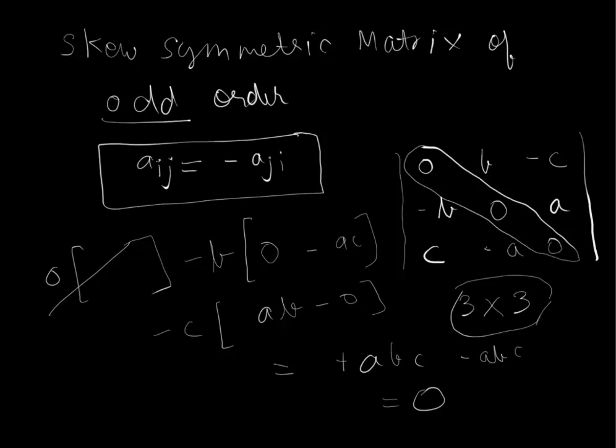And the consequence of this property is that we can derive a general form of a skew symmetric matrix. Remember, all the elements in the principal diagonal are zero and all the elements below and above the principal diagonal are negatives of each other. So this is minus B, this is B, this is C, this is minus C, this is minus a, and this is a.